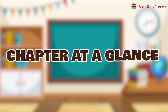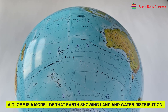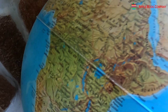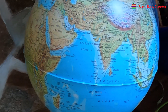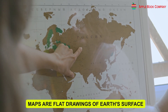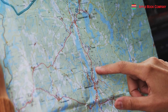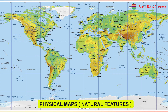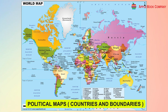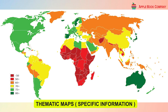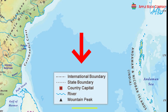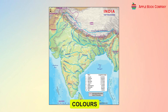Chapter at a glance: A globe is a model of the earth showing land and water distribution, but we can see only one side at a time. Maps are flat drawings of the earth's surface providing detailed information about specific areas or regions. There are physical maps (natural features), political maps (countries and boundaries), and thematic maps (specific information). Maps have a title, scale, direction, symbol, key, and color as their components.